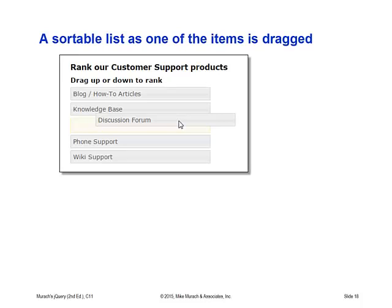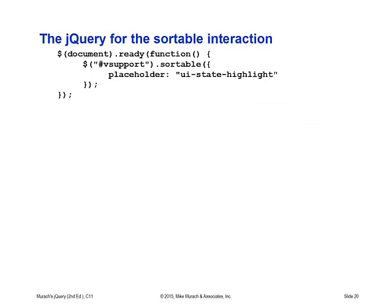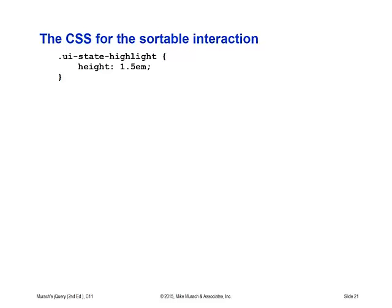A sortable list is something you've probably seen on a multiple choice test or a survey where it says to list items in priority order from favorable to unfavorable, and you can move them around. That's what the sortable list is really about, and that's what jQuery provides. The HTML supports that sortable list. The jQuery sortable function uses a placeholder for the highlight UI, because every time you select something it is highlighted in order to be moved up or down. The CSS gives specifications on the height of that highlight.